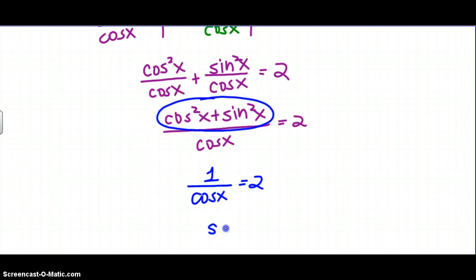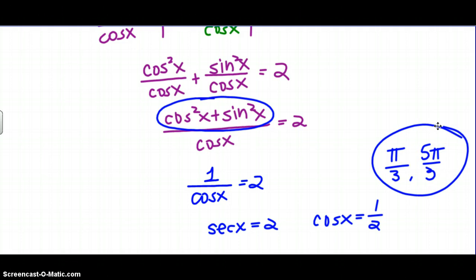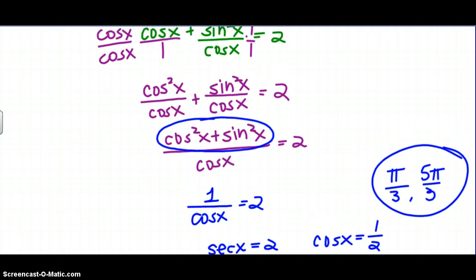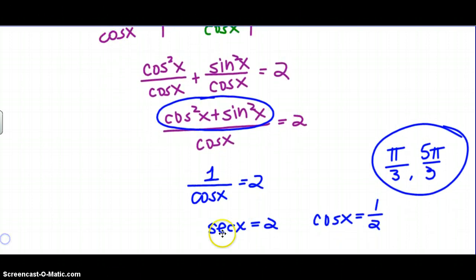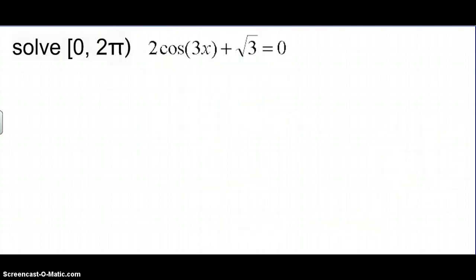One over cosine is the same thing as secant. So, secant of x is equal to two. Well, that means that cosine of x would have been equal to that reciprocal, one half. So, where on your unit circle is cosine equal to a half? That's going to happen at pi over three and five pi over three, quadrants one and four. Okay? So, a little bit of identity work to get us to the point where we can actually solve the equation for something on our unit circle.